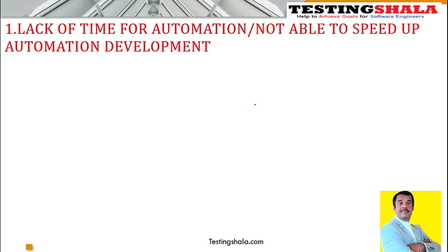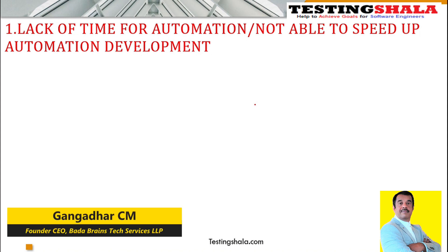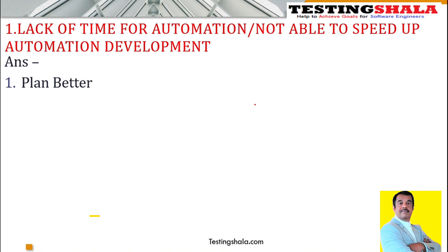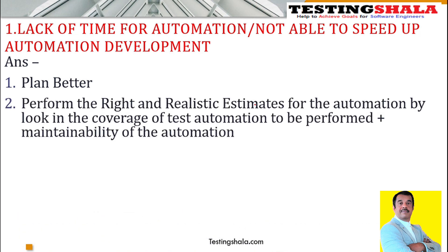This is the normal case faced by most of the testing teams. With the agile concept, more focus is happening to close more user stories more frequently — within two-week or three-week sprint cycles. Because of that, a lot of technical debt rises with respect to automation.